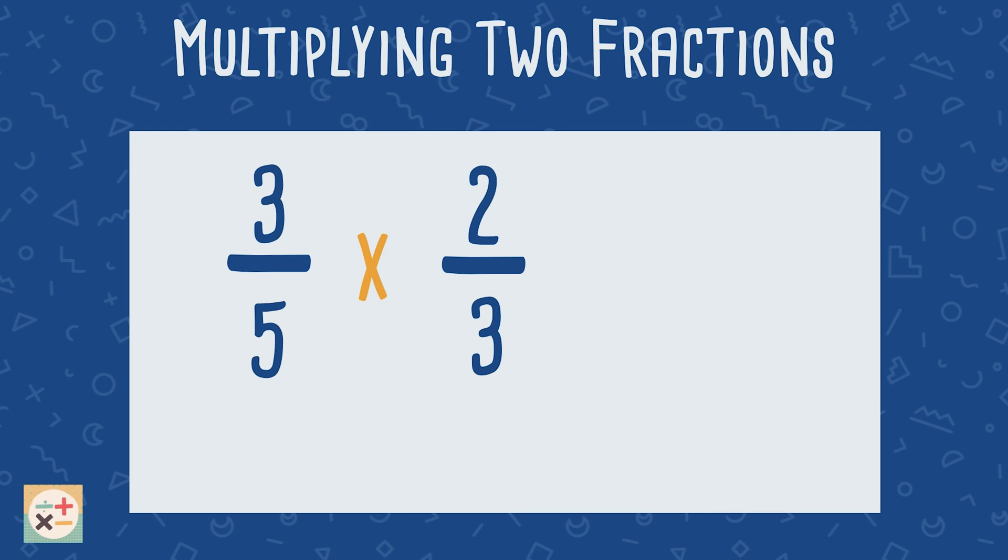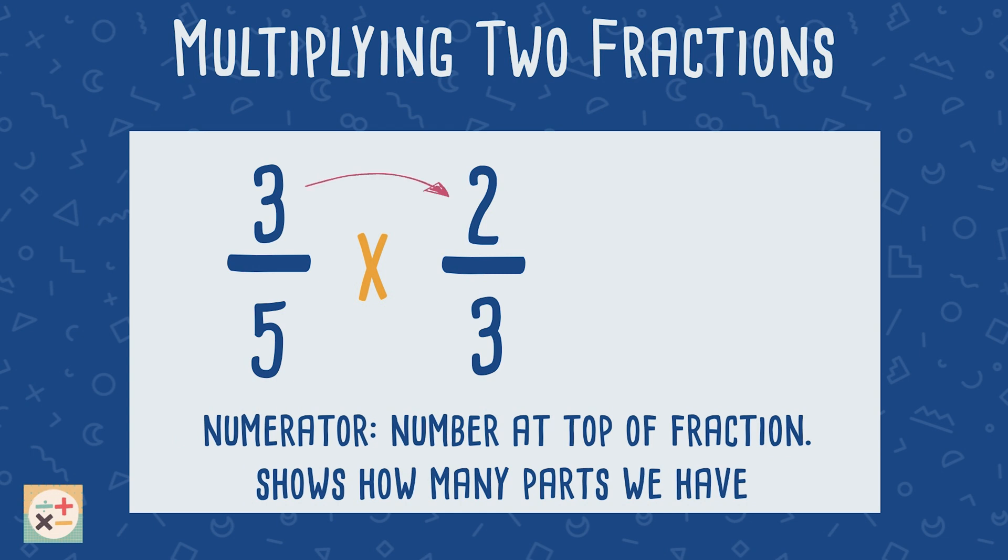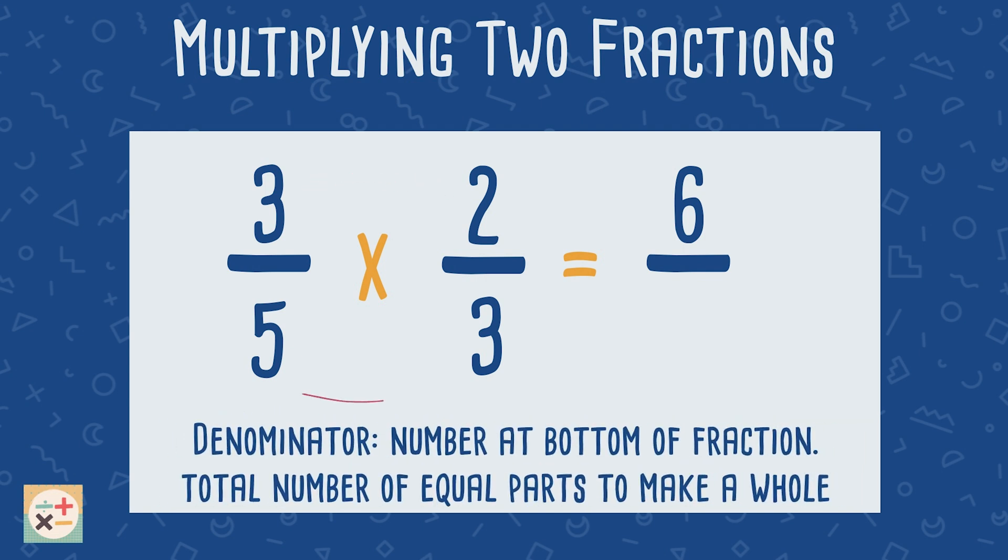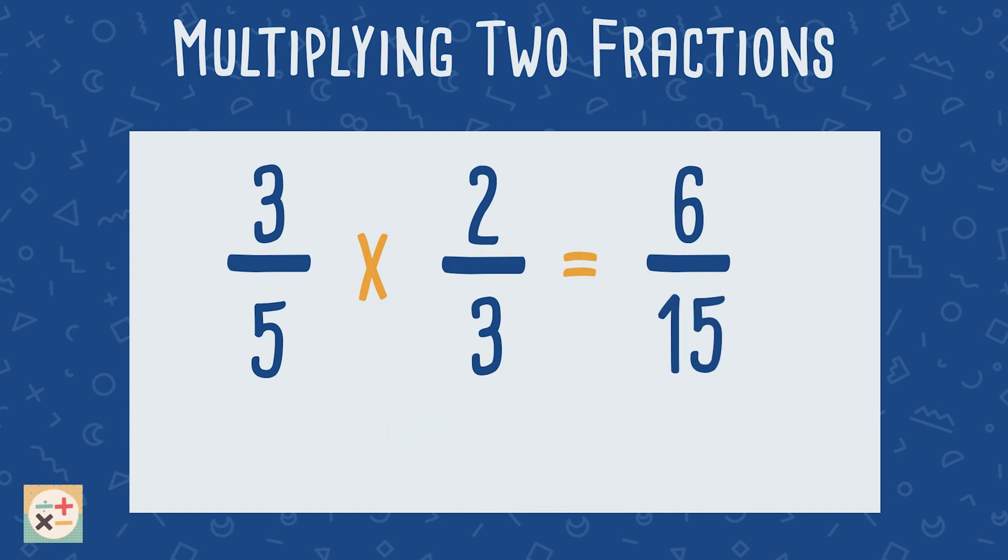Once you have cancelled down both fractions you can then multiply. To do this all you have to do is multiply the numerators together and then multiply the denominators together. Finally, check to see if you can simplify the answer.